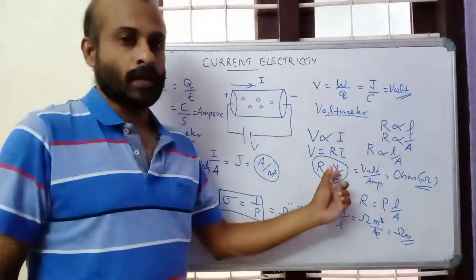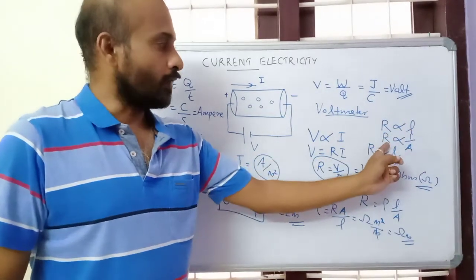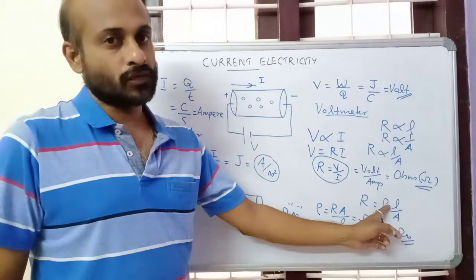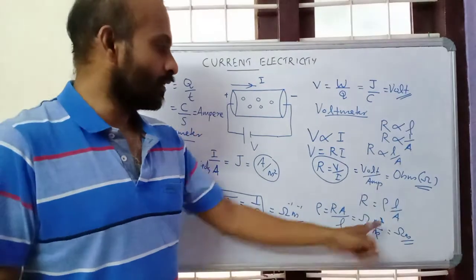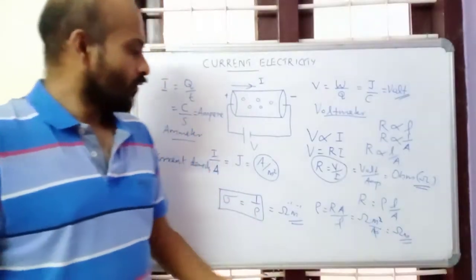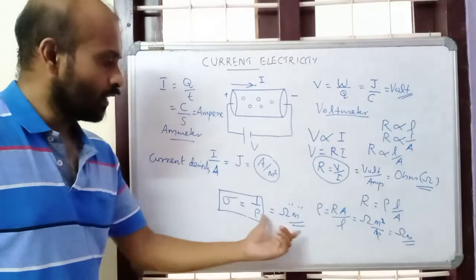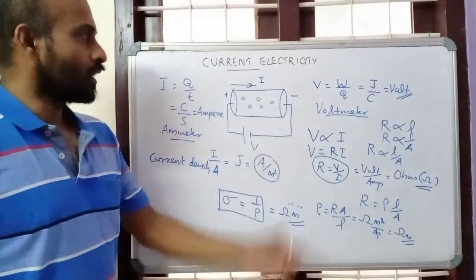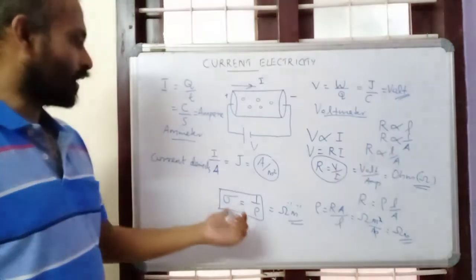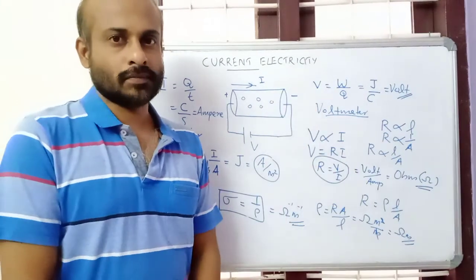V equals R times I, R equals V by I — R is the resistance. Factors affecting resistance: directly proportional to length, inversely proportional to area cross section; combining, R is proportional to L by A, where rho is the resistivity of the conductor. Rho has unit ohm meter. The reciprocal of resistivity is conductivity sigma, equal to one by rho, with unit ohm raised to minus one, meter raised to minus one. These topics, except current density and conductivity, you have already learned in 10th standard. Next class we will see the remaining portions of the chapter. Thank you.